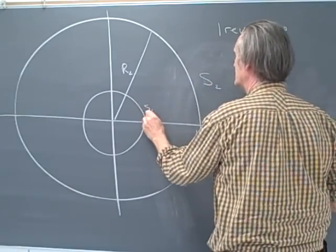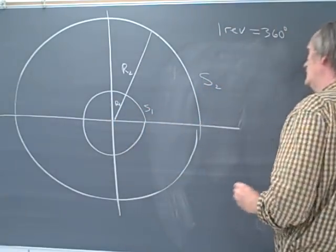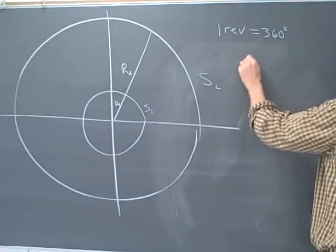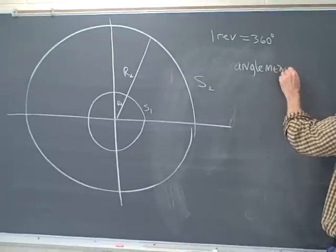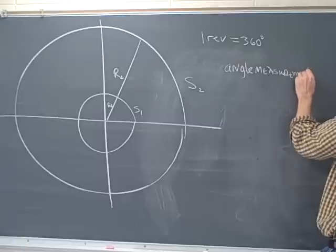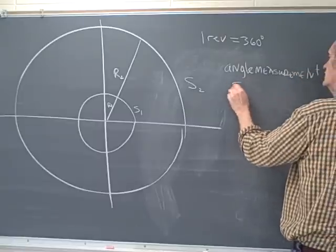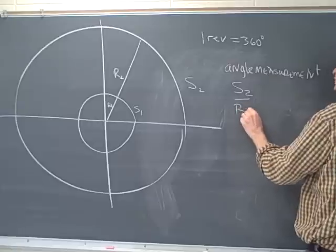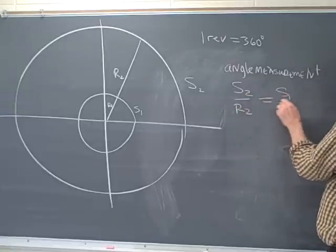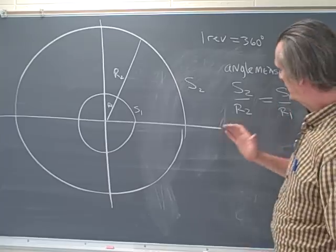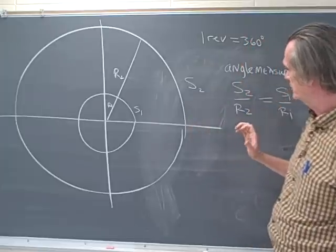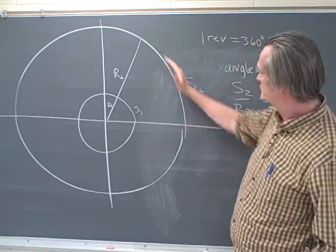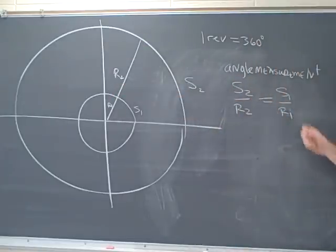I'll call this arc length s1, I'll call this one r1. And so the angle measurement will be the ratio s2 to r2 or s1 to r1. If you approximated these by triangles, you would see that the triangles were similar, and so these ratios are proportional: s2 is to r2 as s1 is to r1.